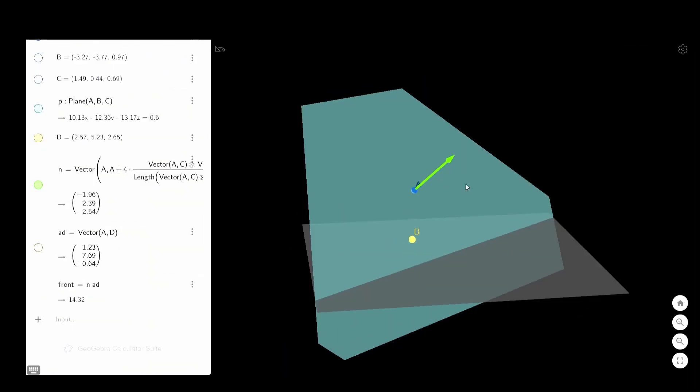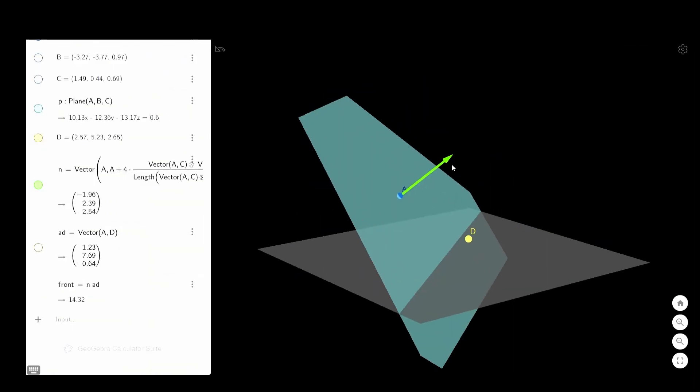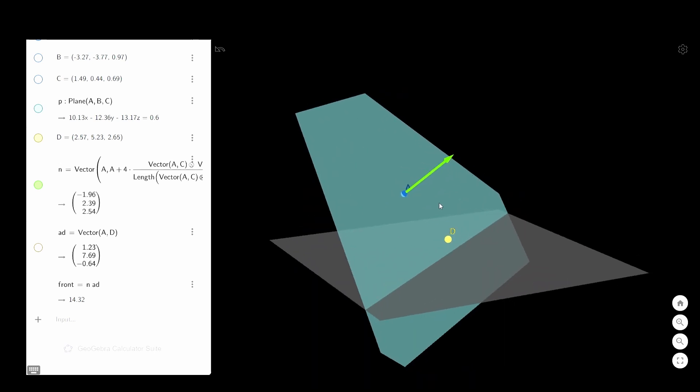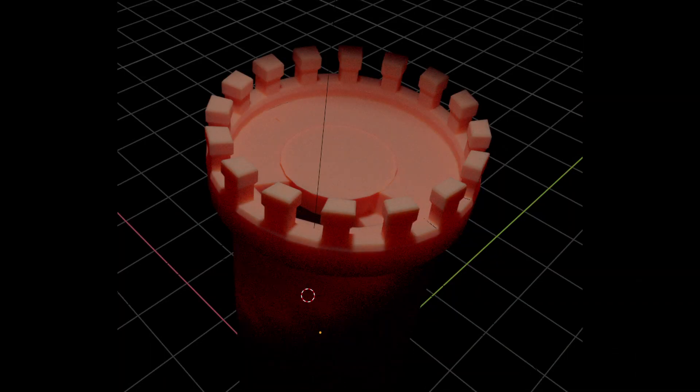Normal cross products can be very useful for calculating normal vectors which are vectors perpendicular to the plane. This can be useful for many things, for example lighting.